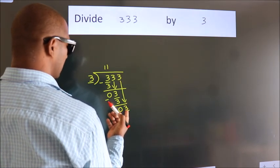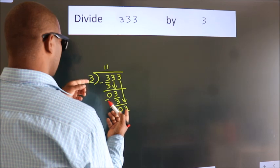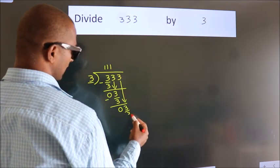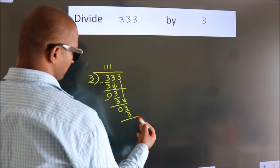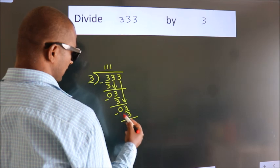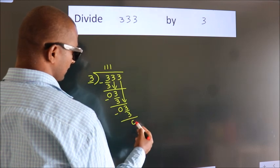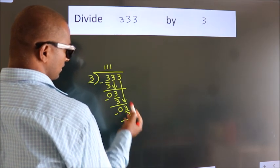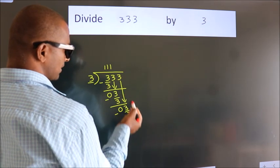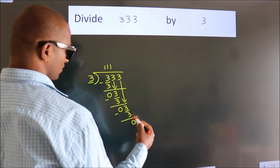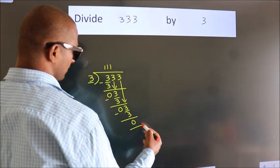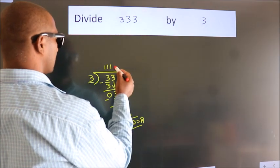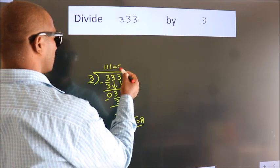When do we get 3? In the 3 table: 3 once is 3. Now we subtract. We get 0. After this, no more numbers to bring down, so we stop here. This is our remainder. This is our quotient.